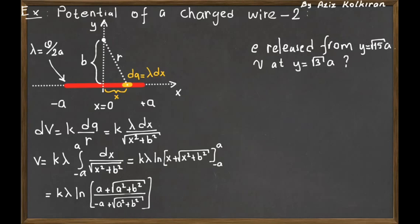Now, if an electron is released on the y-axis from y equals square root of 15a, the question is what is the speed of this electron at y equals square root of 3a.